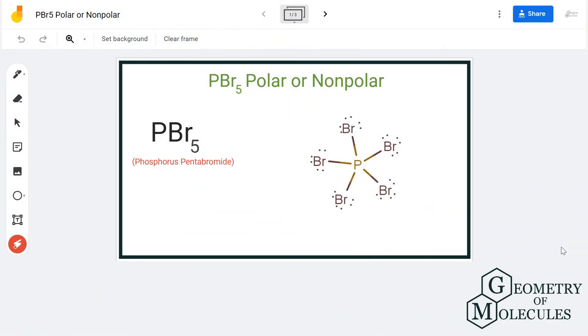Hi guys, today in this video we are going to determine the polarity for PBr5 molecule. It's a chemical formula for phosphorus pentabromide and it is made up of one phosphorus atom and five bromine atoms.